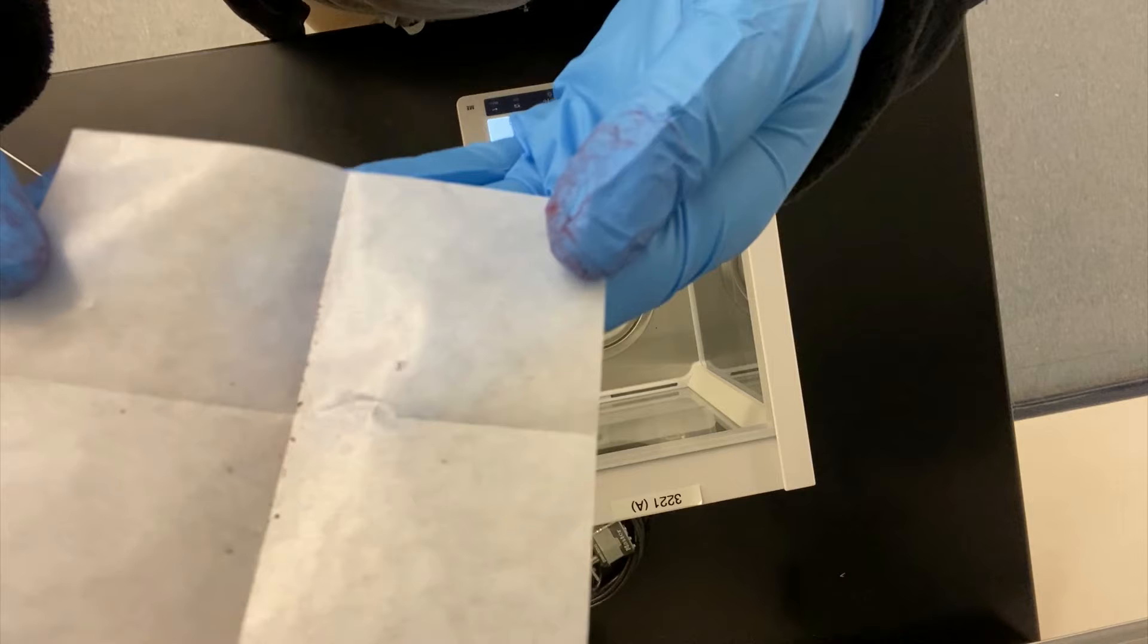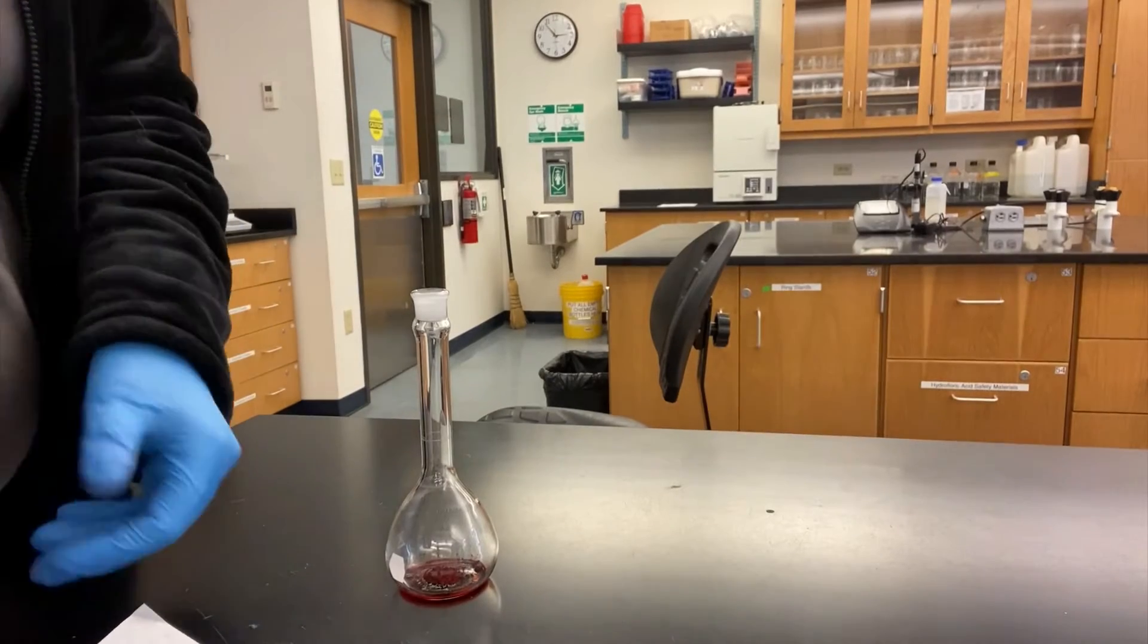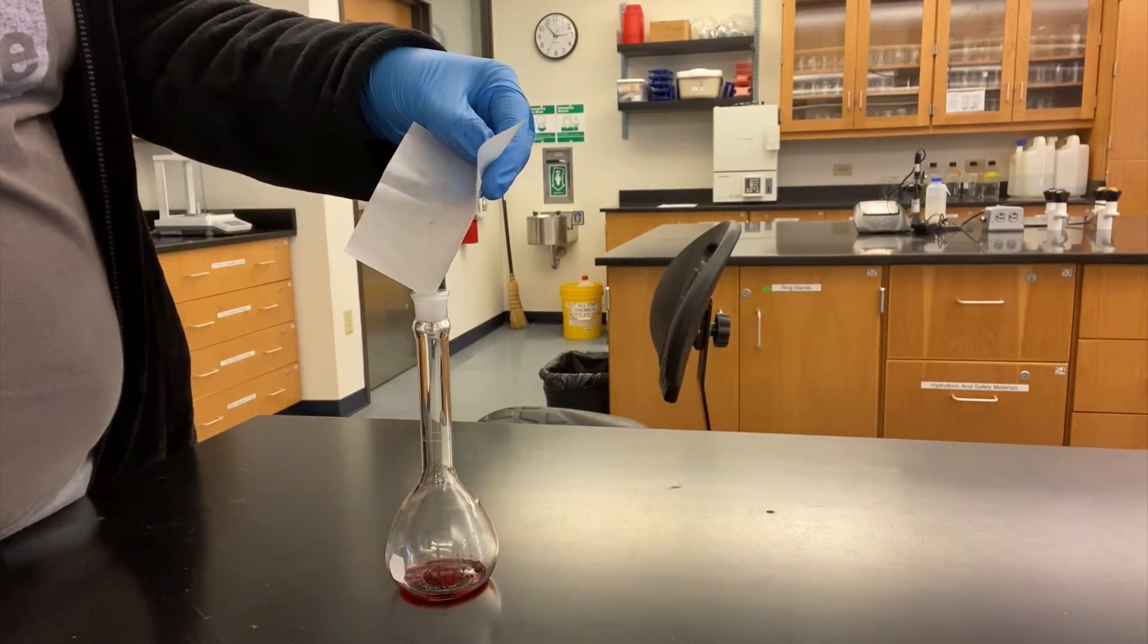The point of quantitative transfer in this case is to make sure that every single bit of the dye that I weighed ends up in my volumetric flask. I weighed out 0.3064 grams and I want all of it in the flask, not 0.3063 grams, not 0.3062, but all of the 0.3064 grams. So what I'm going to do is rinse the residue on the filter paper into the volumetric flask with deionized water.